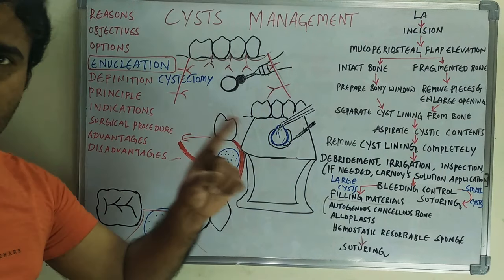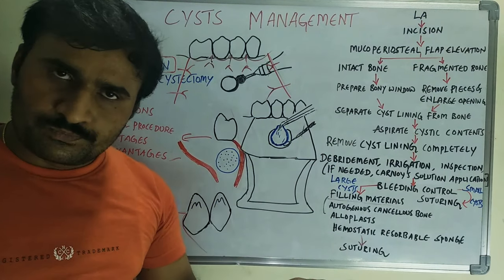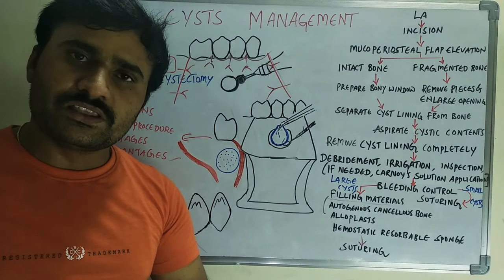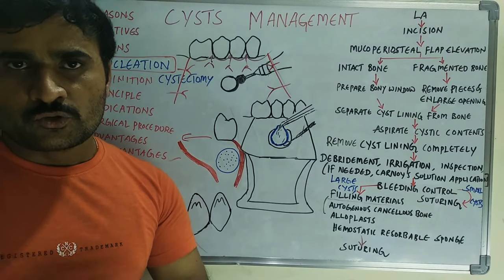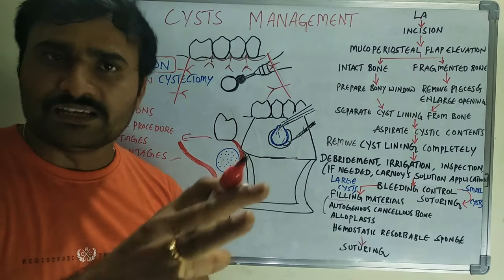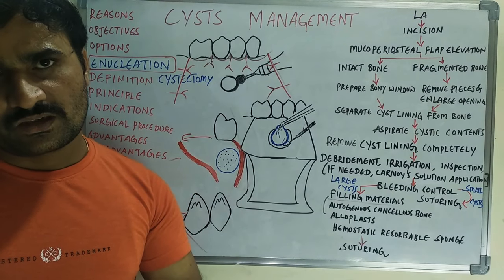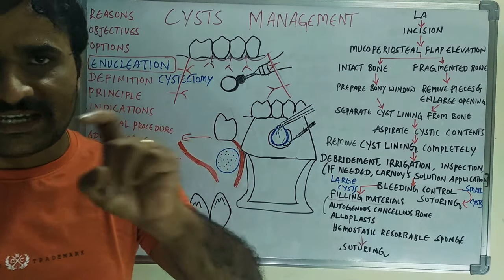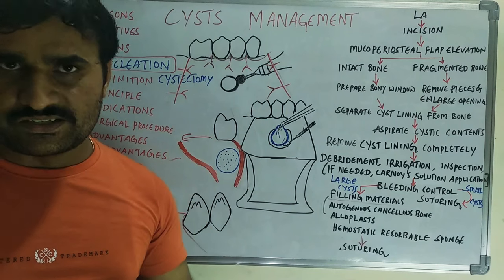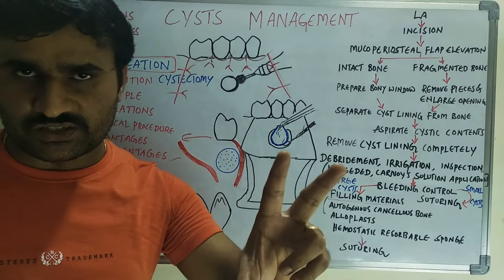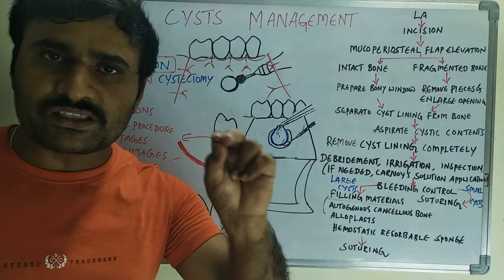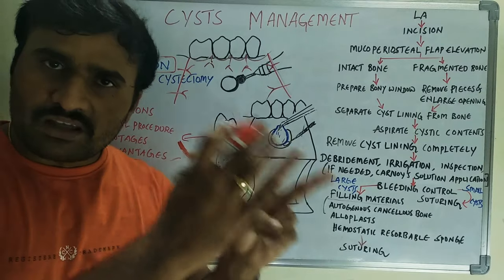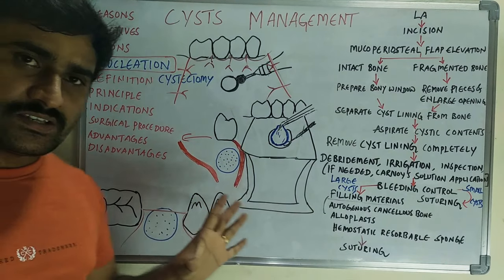The disadvantages of enucleation include: first, it is not possible to directly monitor cyst healing as can be done in marsupialization — radiographs are needed to monitor healing. The second disadvantage is that in cases of large cysts, there may be a risk of producing a pathological fracture of the mandible.